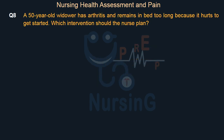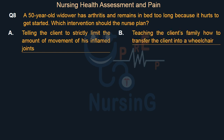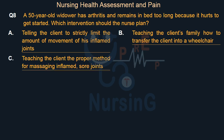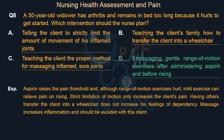A 50-year-old widower has arthritis and remains in bed too long because it hurts to get started. Which intervention should the nurse plan? Option A: Telling the client to strictly limit the amount of movement of his inflamed joints. Option B: Teaching the client's family how to transfer the client into a wheelchair. Option C: Teaching the client the proper method for massaging inflamed, sore joints. Option D: Encouraging gentle range of motion exercises after administering aspirin and before rising. The right answer is Option D.